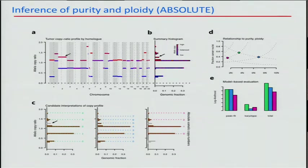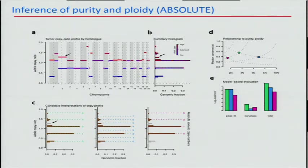Unfortunately, it's impossible to solve this problem without bringing in some external data, because the blue and the green solution fit the data equally well. To break ties like this, we developed what we call karyotype models, which are bootstrapped from thousands of tumor samples we analyzed and also have some information from cytological data. They're essentially mixture models of recurrent cancer karyotypes, specific to the tumor type you're analyzing to be more sensitive.